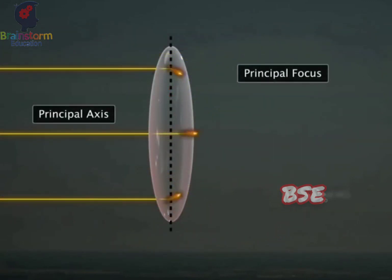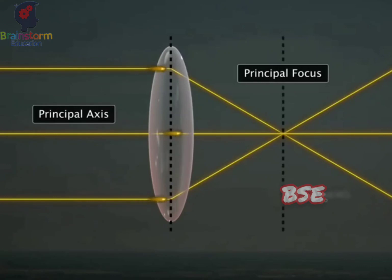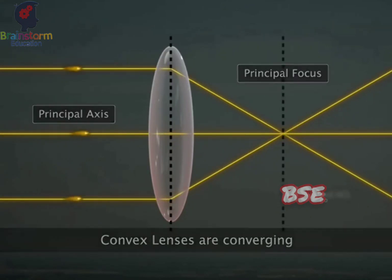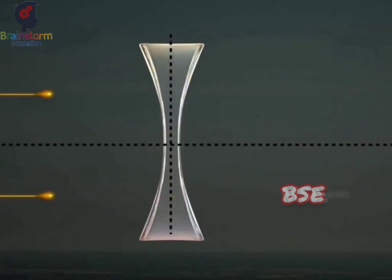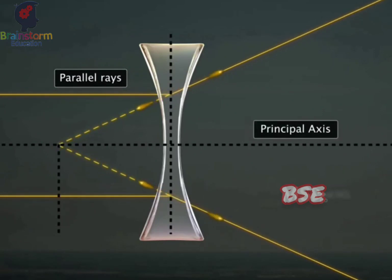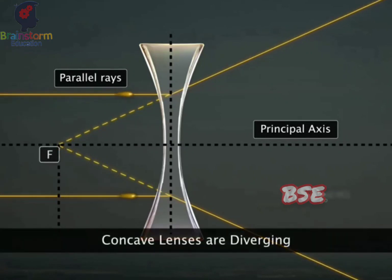A parallel beam of light traveling along the direction of the principal axis converges to a point after refraction through a convex lens. Hence, convex lenses are called converging or positive lenses. On the other hand, a parallel beam of light traveling along the direction of the principal axis diverges after refraction through a concave lens, and the rays appear to come from a single point called the principal focus. Hence, concave lenses are called diverging or negative lenses.